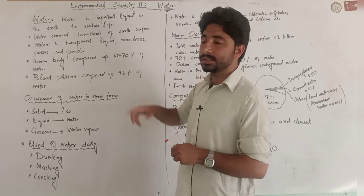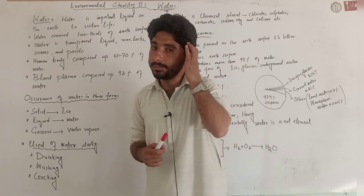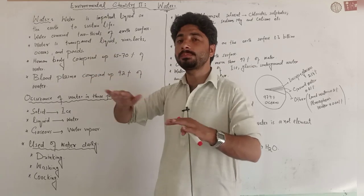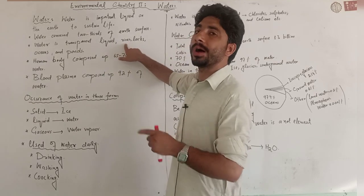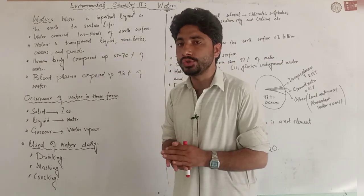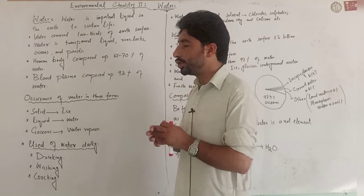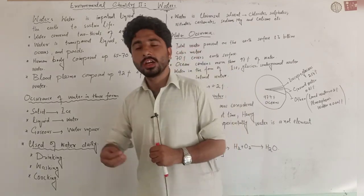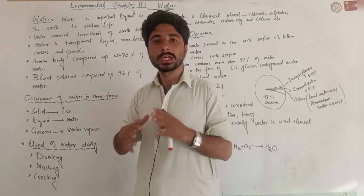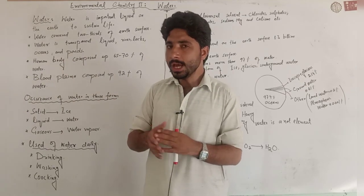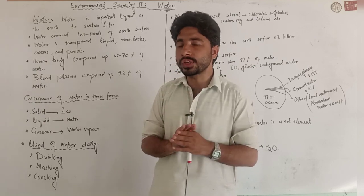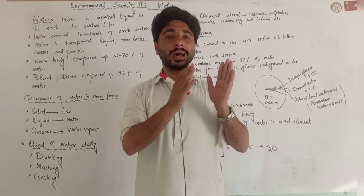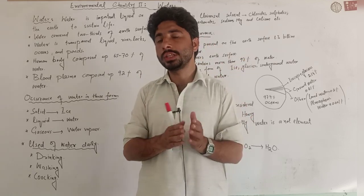Water is a transparent liquid. On the Earth's surface, water is found in the form of rivers — like the Khodu river, the Sindh river — lakes, oceans, and ponds. Water is present on the surface in all these forms.